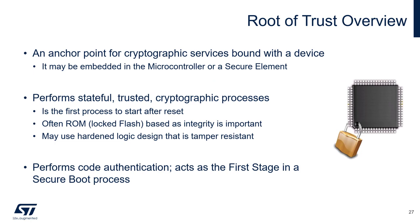The world of security all starts with something you know and trust. Within a product, there must be a starting point of trust — an anchored point for cryptographic functions like authentication, digital signing, and key processing. This is the root of trust. It may be embedded in the microcontroller or an external secure element. The root of trust performs stateful, trusted, cryptographic processes and is the first process to start after reset. Its code is often in ROM or locked flash, as integrity is important. It may even be designed using tamper-resistant logic and involve memory protection units. The root of trust becomes the anchor point in the chain of trust.